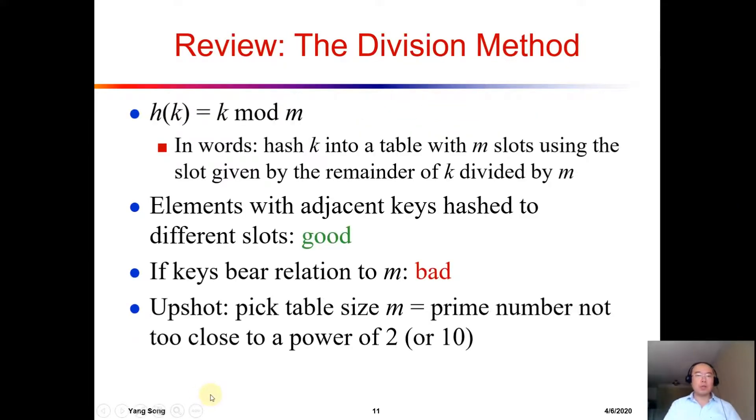To reduce the possible number of collisions if we want to use the division method, usually we want to pick the table size M to be a prime number, and that prime number is not too close to a power of 2 or 10. Usually this is the golden standard to make the division method usable.